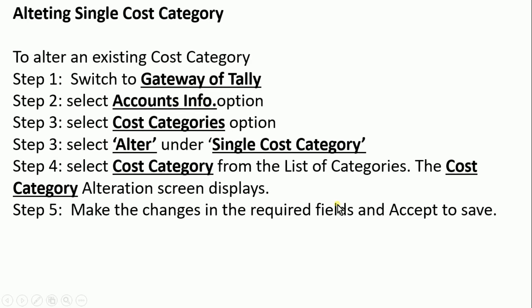To alter a single cost category, switch to Gateway of Tally, select Accounts Info, select Cost Category option, select Alter under single cost category, then select the cost category from the list of categories. The cost category alteration screen will be displayed. Make the changes in the required field and press Ctrl+A to save.